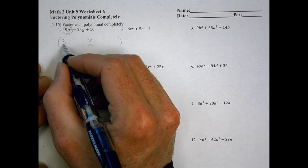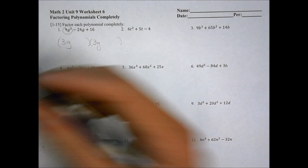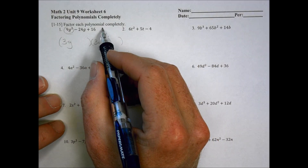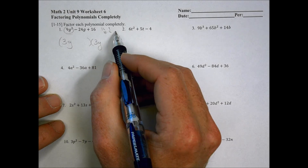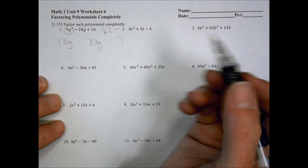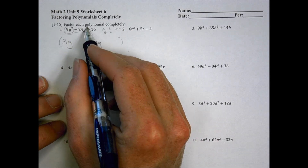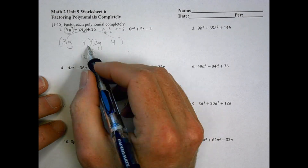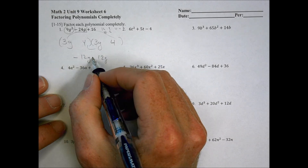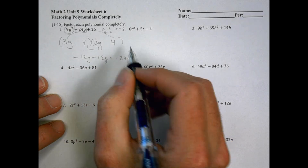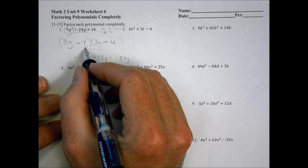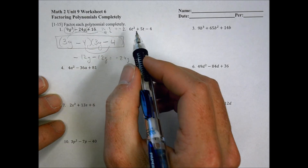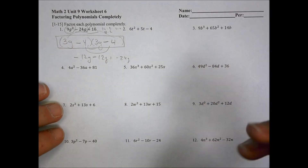On the first problem we have 9g squared. I'm going to start by breaking it into 3g times 3g — I like smaller numbers. For 16, options are 16×1, 8×2, or 4×4. I need to get to negative 24g on the outside and inside terms. With 3 and 3, I'll put a 4 and a 4, giving 12g and 12g. Negative 12 plus negative 12 equals negative 24, and negative 4 times negative 4 gives positive 16. So the answer is (3g − 4)², or (3g − 4) times (3g − 4).